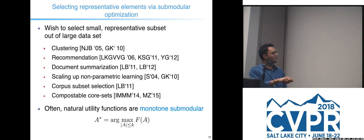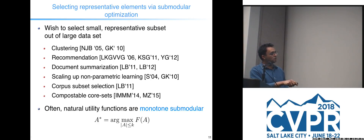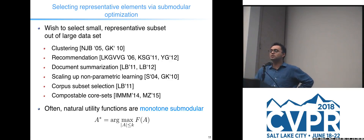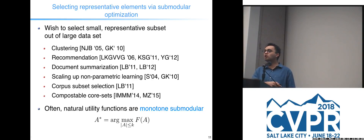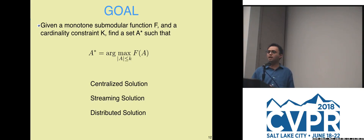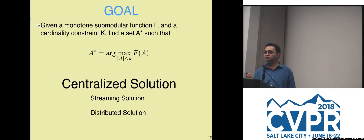In summary, we have a utility function f that is often monotone submodular, but not necessarily. To find a small representative subset, one natural constraint is to find at most k elements — a cardinality constraint. But there are more complicated constraints that model other requirements. For instance, you might want to summarize data such that only a handful of data points come from each category, which cannot be modeled by a simple cardinality constraint. Today I will discuss centralized, streaming, and distributed solutions.